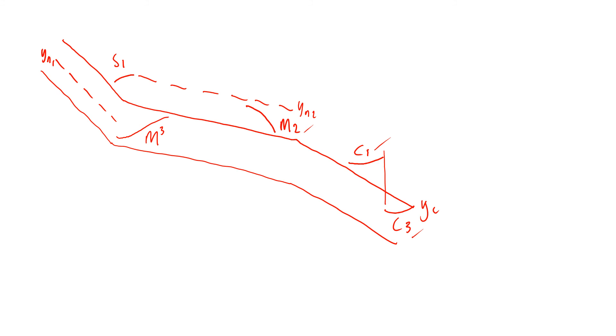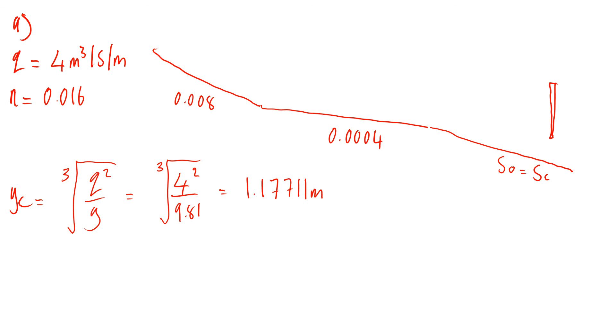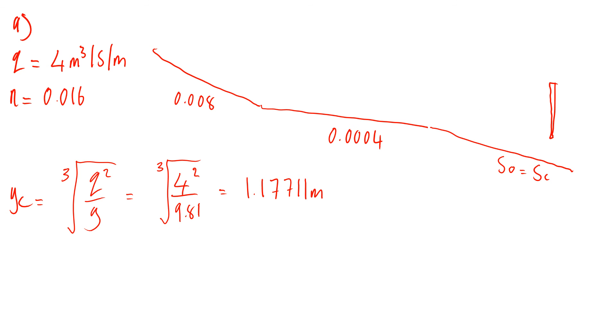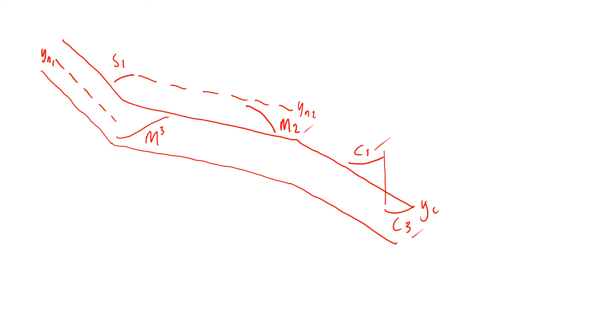So the next part of the question says in which of the reaches will the hydraulic jump occur. That will allow you to work out which profiles actually occur. Until this point in the question you would get full 12 marks. Then the final part assumes the hydraulic jump occurs in reach one.